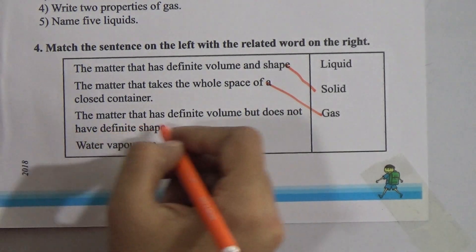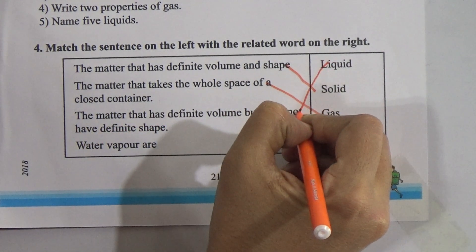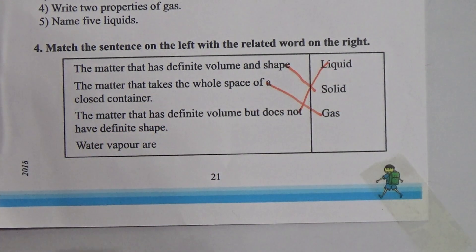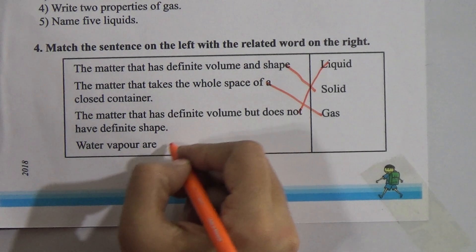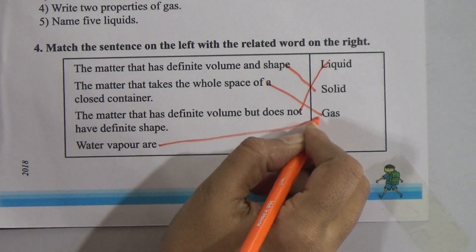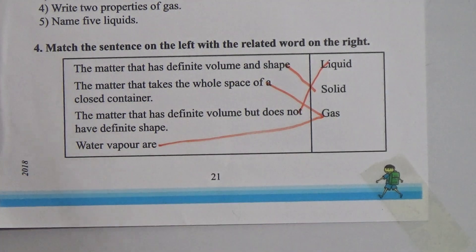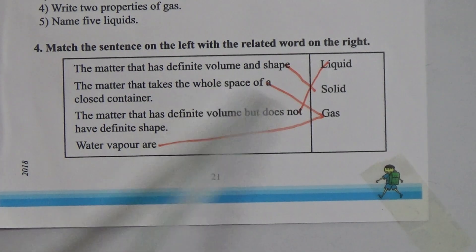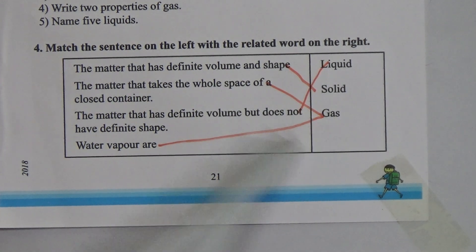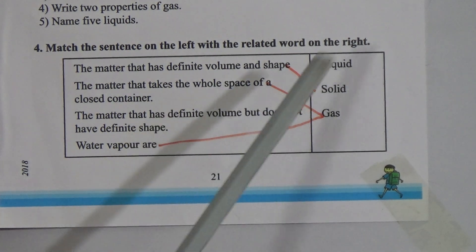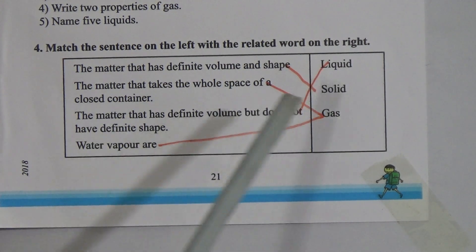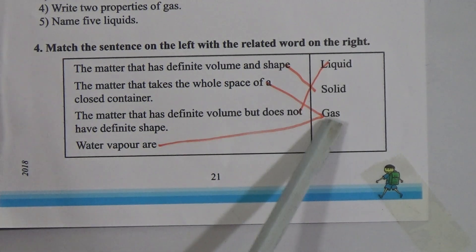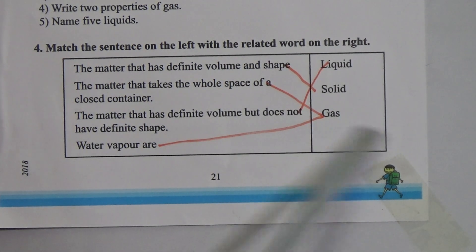Matter that has definite volume but does not have definite shape is liquid. Water vapor — that is gas. So the first one matches with solid, the second one matches with gas, the third one matches with liquid, and the fourth one matches with gas again.